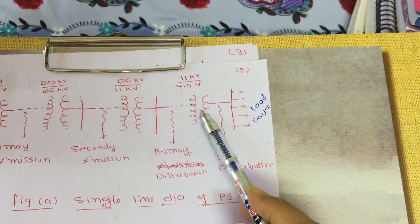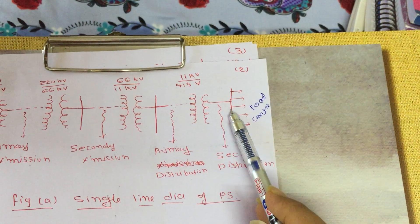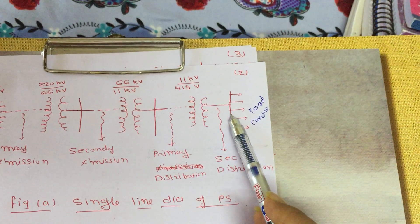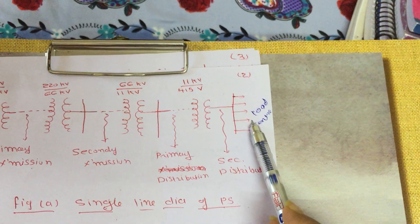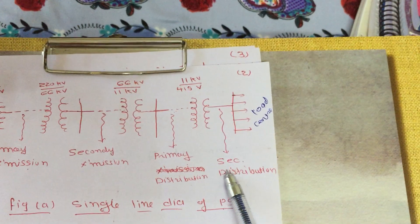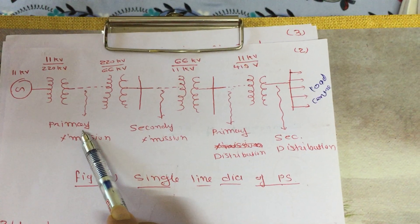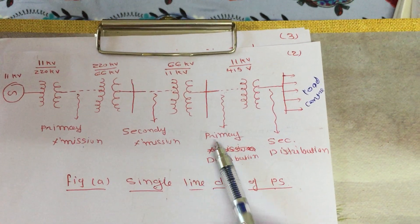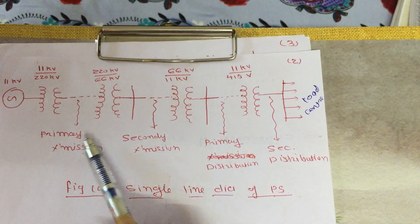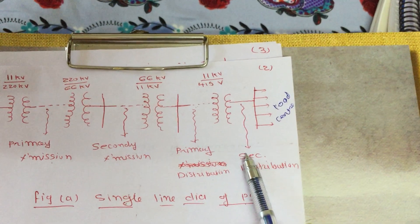Then another step-down transformer converts 11 KV into 415 V. At this point, the consumer, local, or residential load is available, so this is known as secondary distribution. To summarize: this is primary transmission, this is secondary transmission, this is primary distribution, and this is secondary distribution.